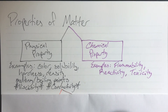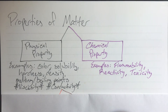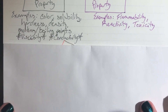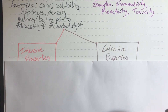Chemical properties can only be discovered by destroying what you are testing. Some examples of a chemical property would be flammability — you can't test whether something is flammable without risking destroying what you're testing — reactivity, meaning if it will interact with or react or change with any specific other compound, and toxicity, which refers specifically to how it affects the human body and whether we will get sick from it.